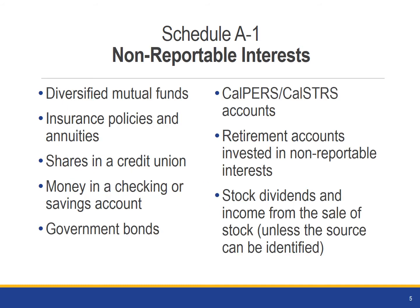Fortunately, there are many types of investments that are not reportable on your Form 700, the most common of which are mutual funds. However, there are many other types of investments that you won't have to report either. These include money in checking and savings accounts, insurance policies, government bonds, and CalPERS and CalSTRS retirement accounts. Nor do you have to report dividends or income from the sale of a stock, so long as the source of the income is unknown.